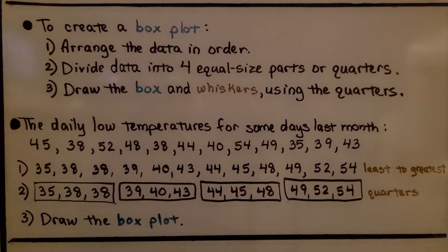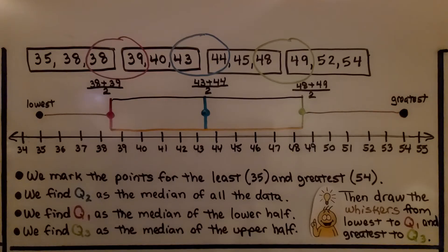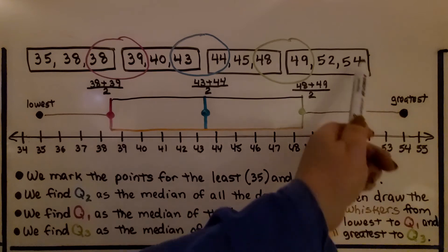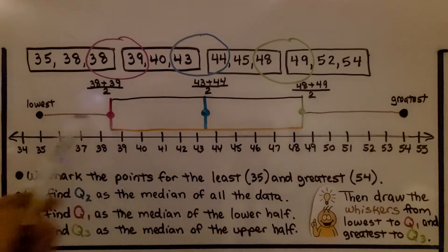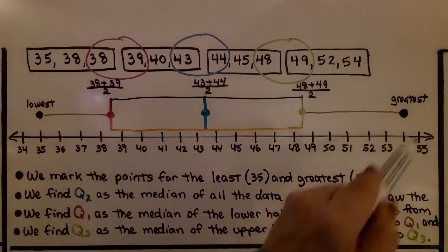To draw the box plot for the daily low temperatures of some days last month, we start by making a point, drawing a mark here for the lowest which is 35, and the greatest which is 54. Before we do anything else, we mark the lowest and greatest.